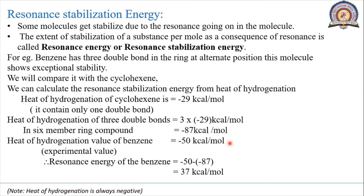But the experimental value of heat of hydrogenation of benzene is equal to minus 50 kcal per mole. These two values are not comparable. The Resonance Energy of benzene is the difference between these two energies: −50 − (−87) = 37 kcal per mole. This means benzene has extra stability due to resonance, and its Resonance Energy is 37 kcal per mole. Note: heat of hydrogenation is always negative.